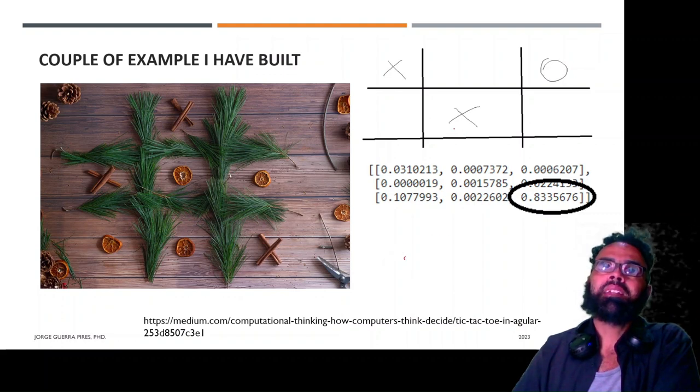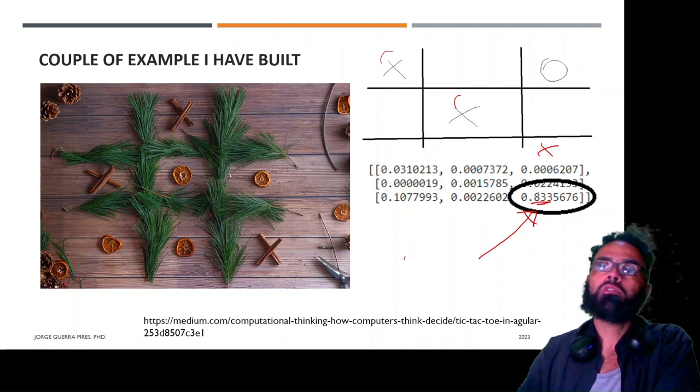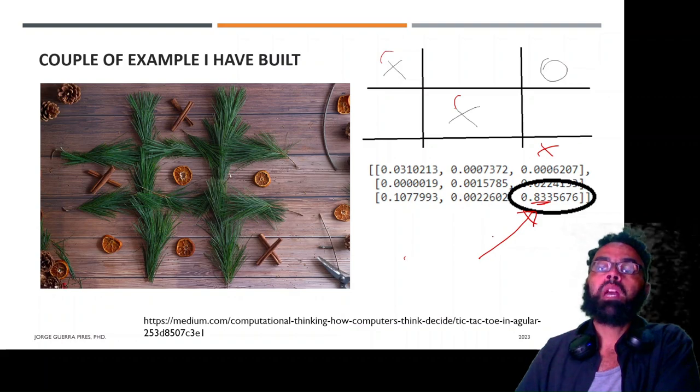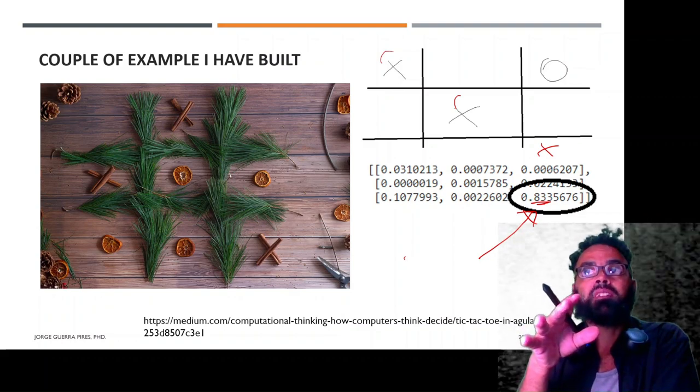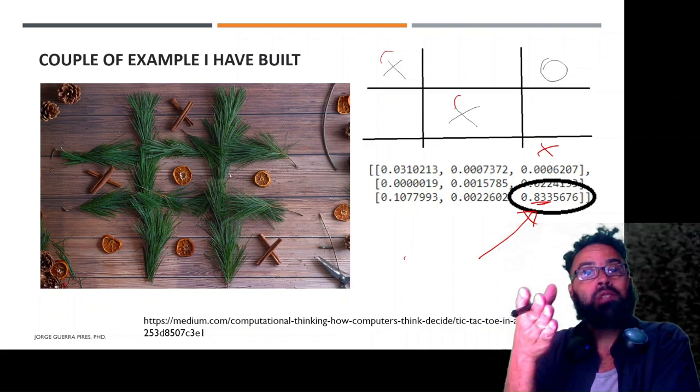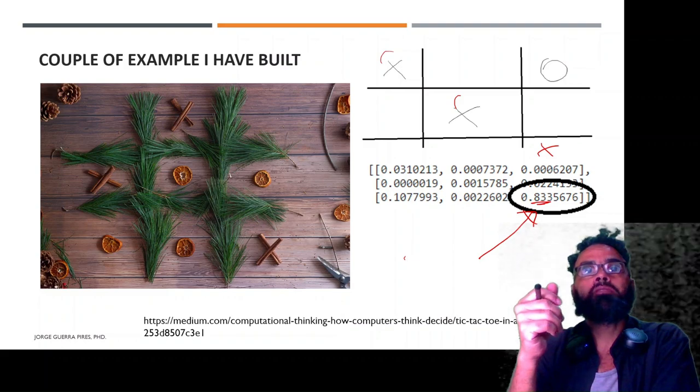That was very interesting because it's a tic-tac-toe. So if you are here and here, of course you have to defend here. As you can see, it gave you a probability of 80%. All the output of this model are like this, from 0 to 1. So the output is almost 80% that you should defend. That's okay. It's quite cool that the model was able to see that you should defend.